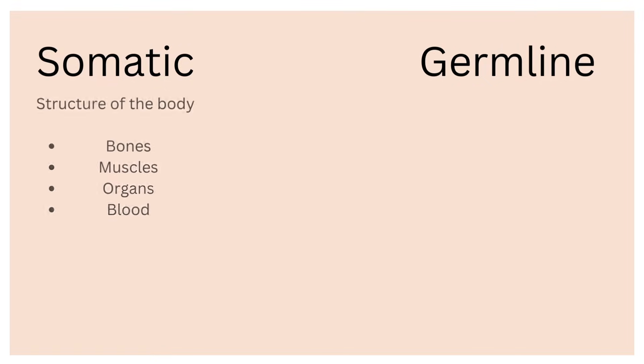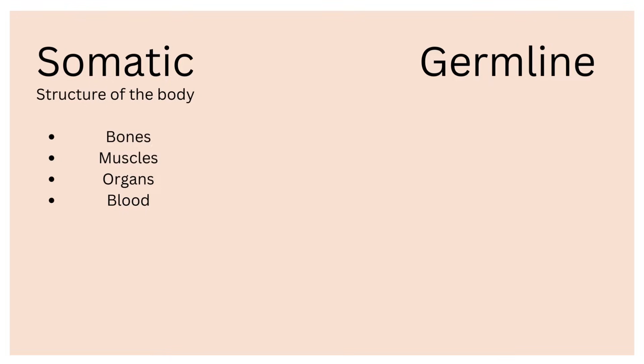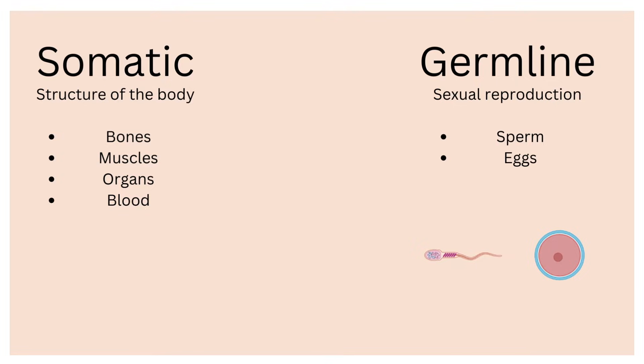Before we begin getting into teratomas, let's cover some relevant biology to make sure we can understand how tumors can occur in general. In our bodies, two types of cells exist: somatic and germline. Somatic cells, sometimes referred to as vegetal cells, are involved in building the body and its different components. Germline cells are the cells that participate in sexual reproduction. To put it simply, germline cells are eggs in females and sperm in males, while somatic cells are what make up the rest of our bodies.